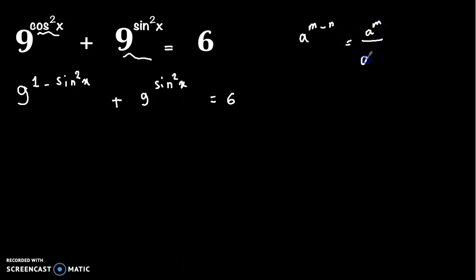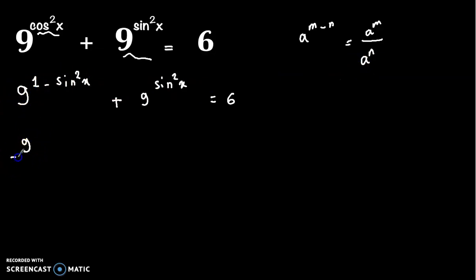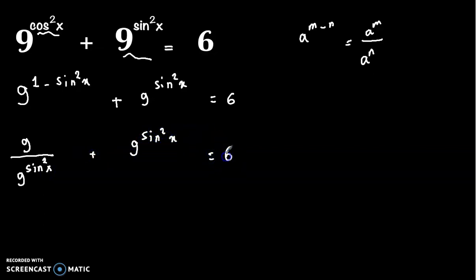Applying that rule here, we get 9 to the power 1 — which is 9 — divided by 9 to the power sine squared x, plus 9 to the power sine squared x, equals 6.